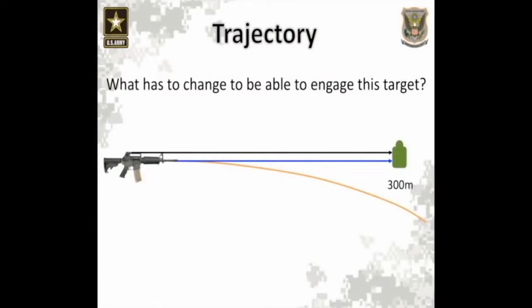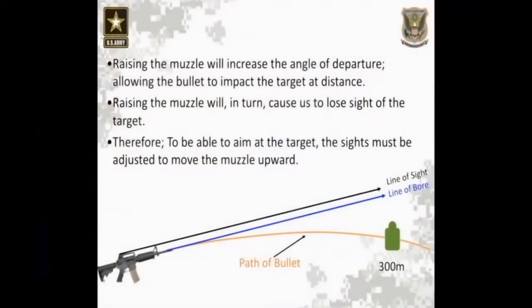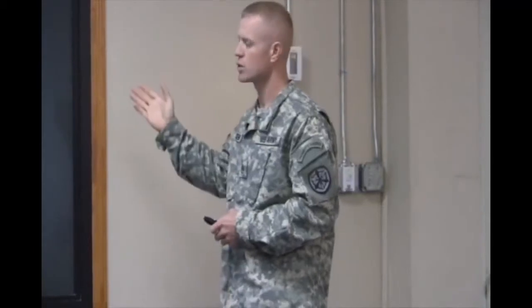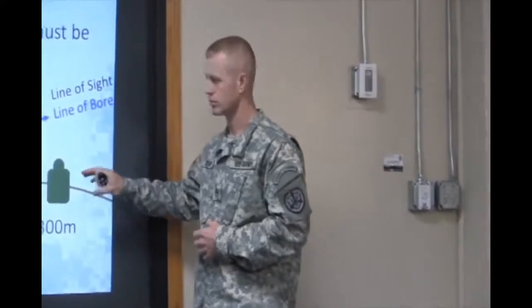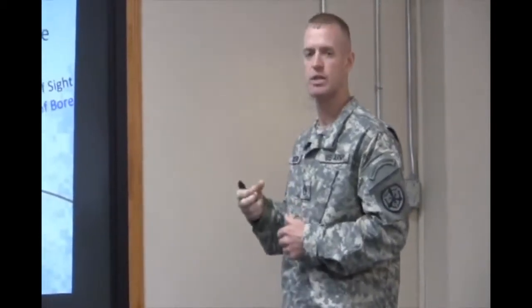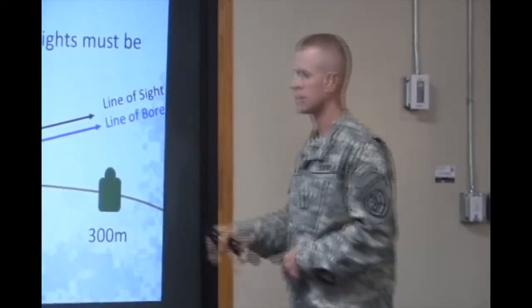Now that we have these three parts of trajectory, what has to change in order for us to be able to engage a target at 300 meters? We have to increase the angle of departure. Raising the muzzle will increase the angle of departure, allowing the bullet to impact farther downrange. If you raise the muzzle without moving the sights, it would be very hard for you to see through the sights and still look at the target. Therefore, in order for us to aim at the target and hit it, we have to zero the sights to where the line of bore and the path of the bullet intersect.